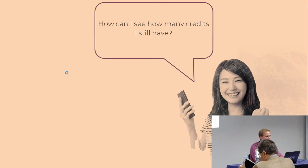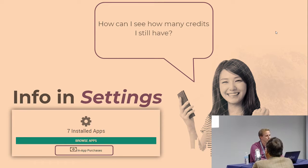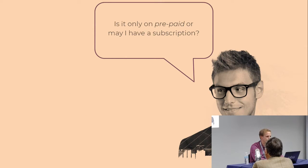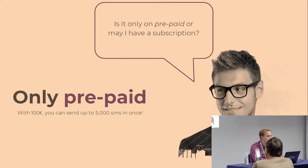Second question: how can I see how many credits I still have? If you go into the in-app purchase section, you can see the credits you have to send SMS. Third question: is it only prepaid or can I have a subscription? This is only prepaid, but if you put 100 euros of credit, you can send up to 5,000 SMS at once, so a subscription is probably not needed.